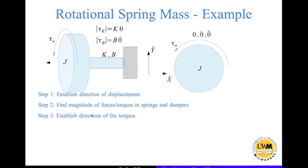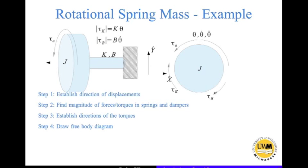Step 3 is to establish the directions of the torques. Since the mass rotates clockwise, the spring gets twisted in that direction and tries to untwist, so the spring torque Tau_K acts counterclockwise — which is the negative direction. Similarly, the rotational damper is twisted clockwise and will try to untwist, so it exerts a torque Tau_B in the counterclockwise direction, which is also negative. This constitutes the free body diagram showing all torques on the mass.